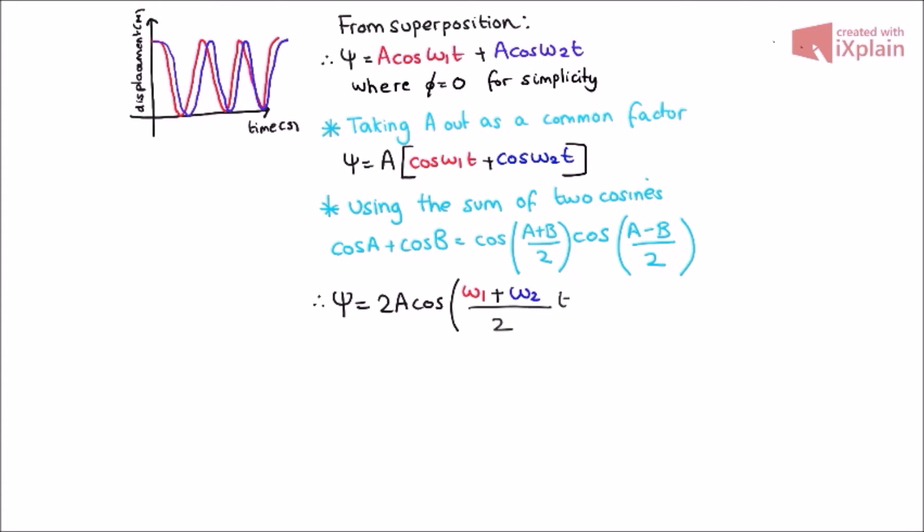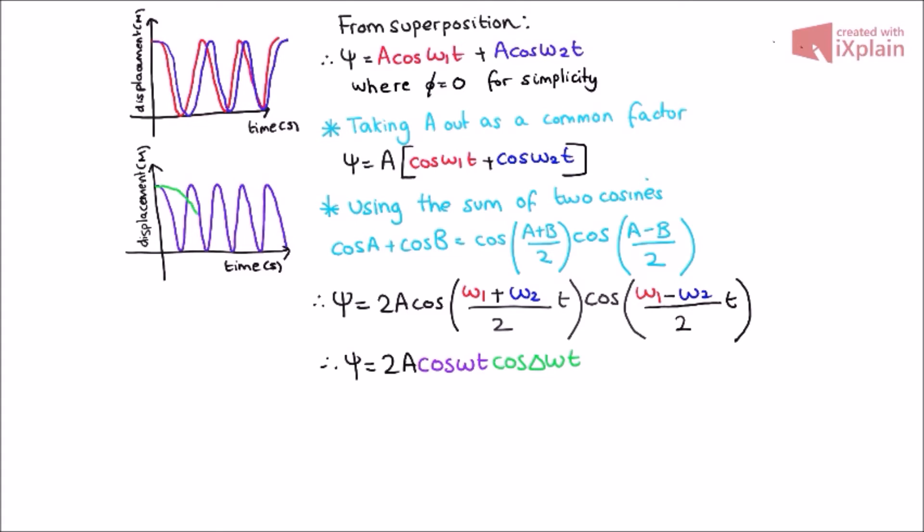We will now define two new angular frequencies, where omega equals omega 1 plus omega 2 over 2, and delta omega equals omega 1 minus omega 2 over 2. So the resultant function looks a little something like this, where psi equals 2A cos omega t cos delta omega t.